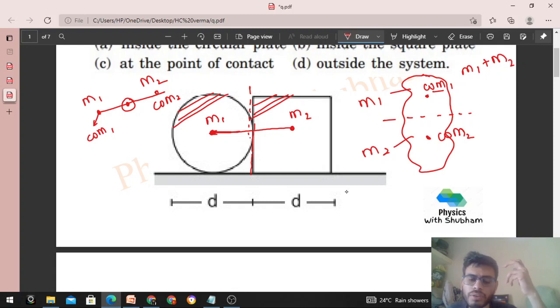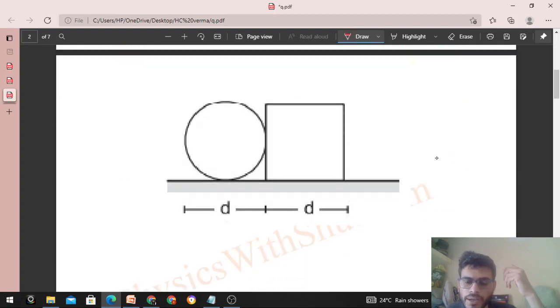Square plate ka area zyada hooga, aap nikal ke bhi dekh sakti ho. Aur is tarah se feel karo. Let me use a different diagram. Yeh wala diagram dekho - is circle ko agar maa pura pura is square ke andar dhal dhu, so something like this, is tarah se andar chala jayega. Or kuch area bach jayega. Aap dekho itna jo area hai yeh additional hai square ke paas.